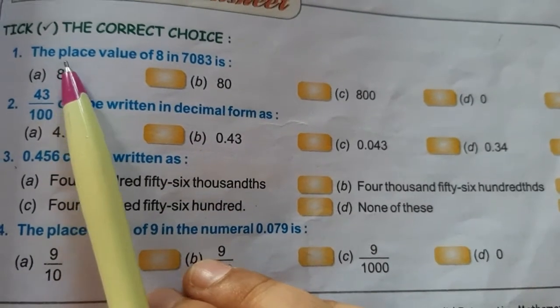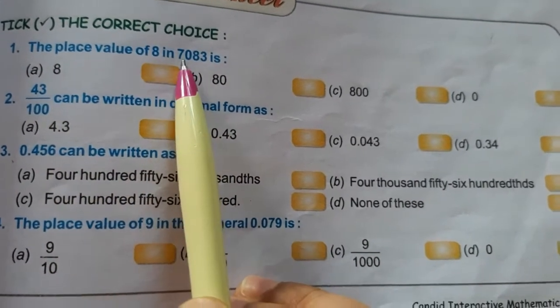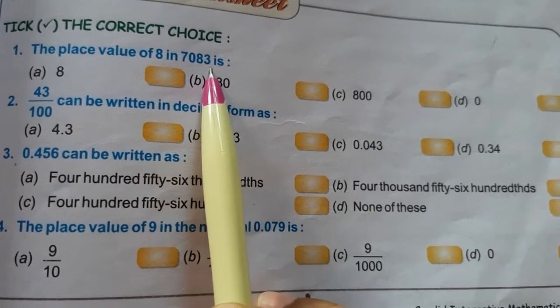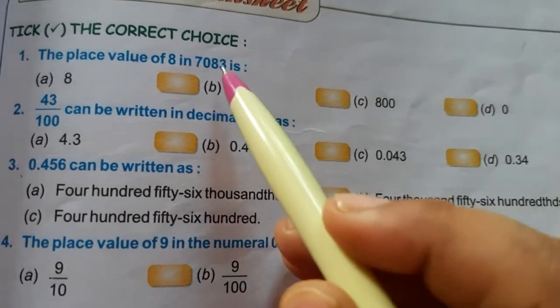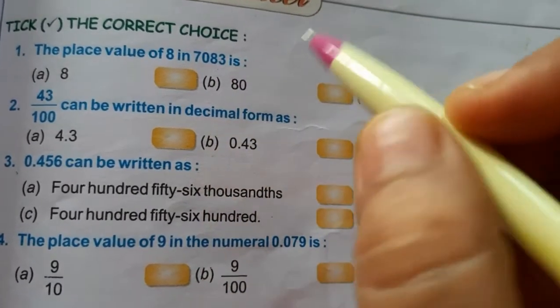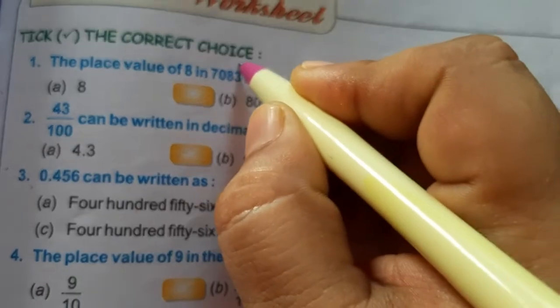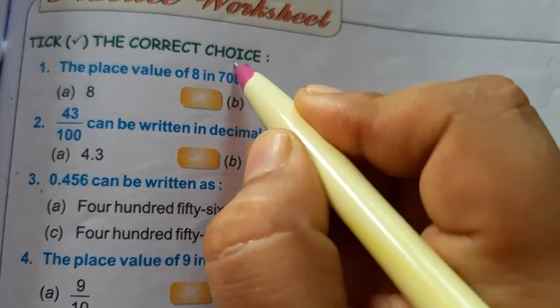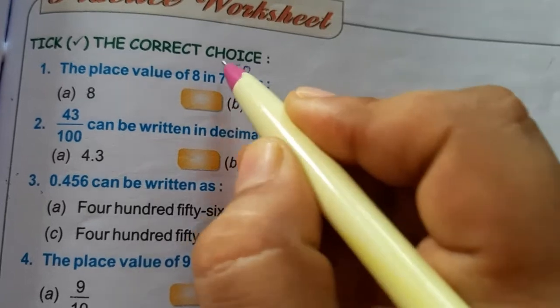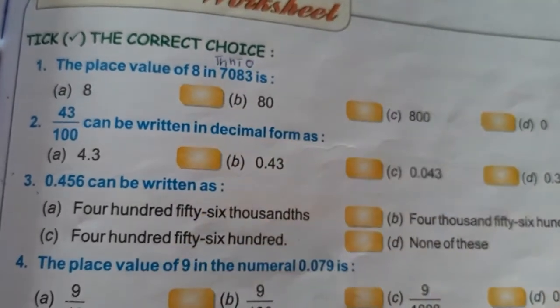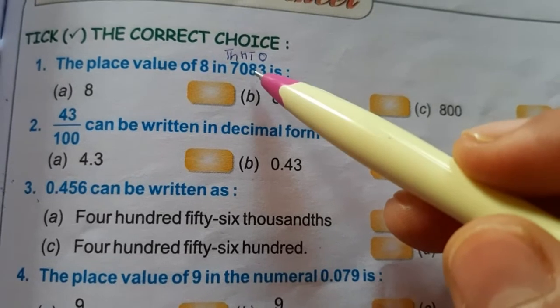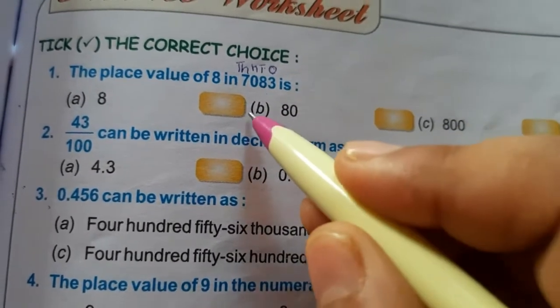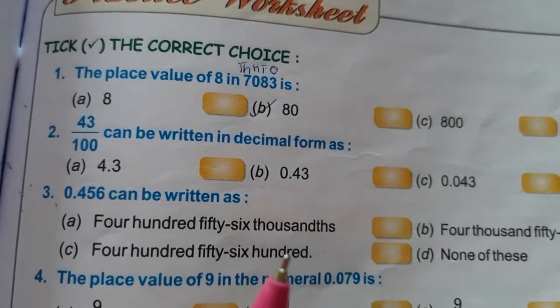The very first question is the place value of 8 in 7083. So what will be the place value? We have to tell the place value of 8. Before writing place value, we have to write down here 1's, 10's, 100's, and 1000's. So what is the place value of 8? 8 is at 10's, so its answer will be 80.